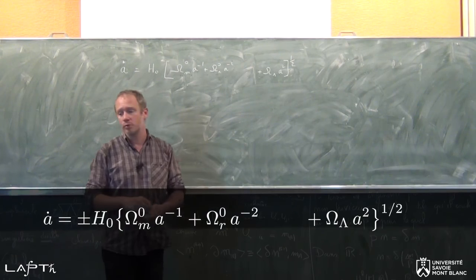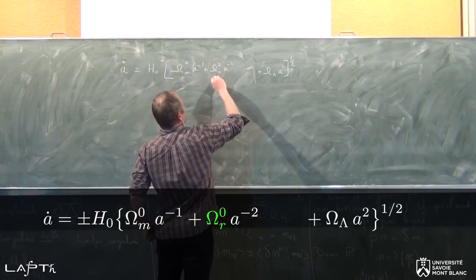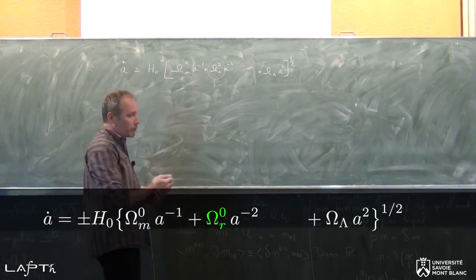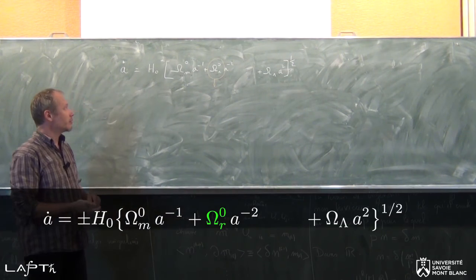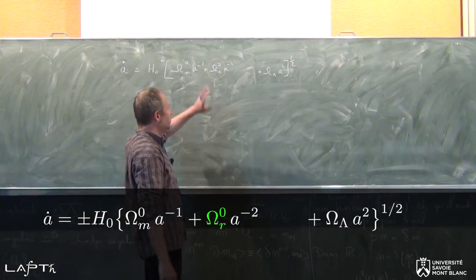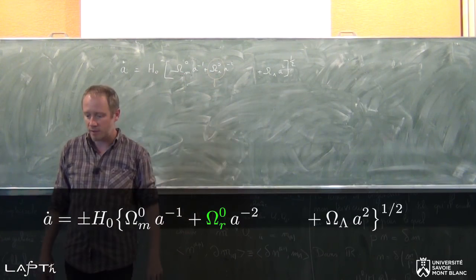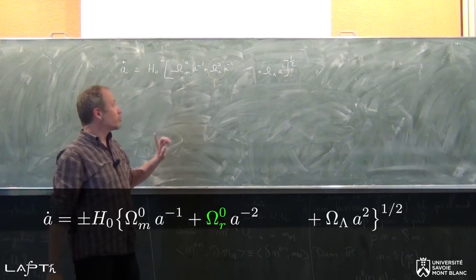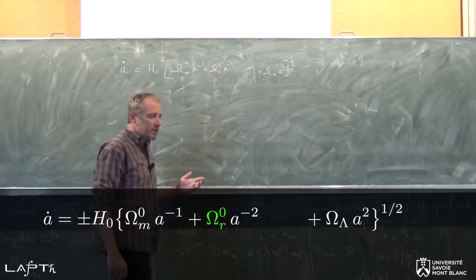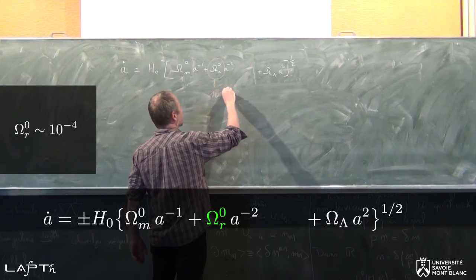Dans l'équation de Friedman, la question se pose : quelles sont les valeurs des paramètres cosmologiques de l'univers dans lequel on vit ? Parmi toutes ces grandeurs, il y en a une qu'on peut mesurer de façon assez directe : c'est Ω_R — le rayonnement. On peut le mesurer assez facilement puisque c'est du rayonnement qu'on observe, essentiellement dans le domaine des micro-ondes dans l'univers qui nous entoure. On mesure la densité d'énergie aujourd'hui, on peut évaluer la densité critique, et on trouve que Ω_R0 est de l'ordre de 10⁻⁴.